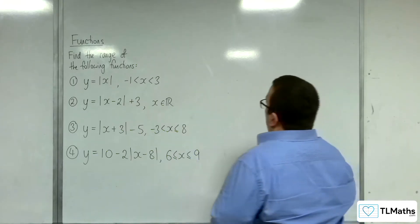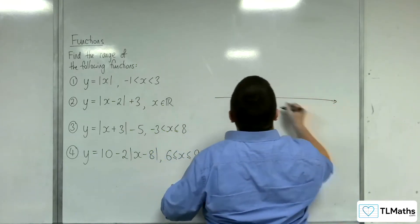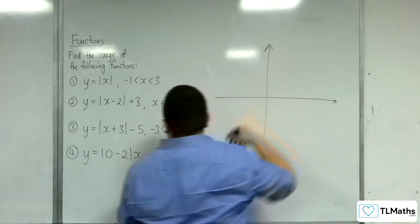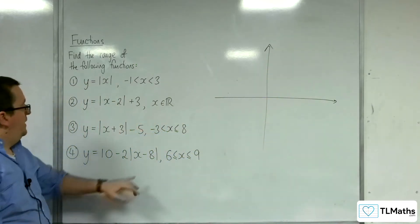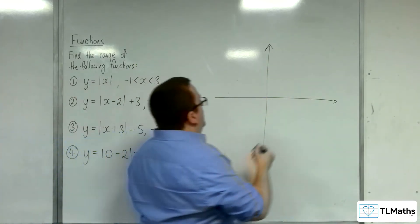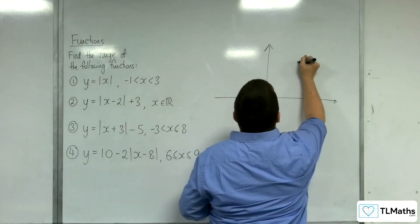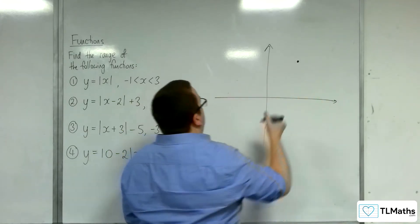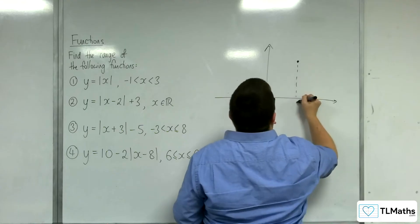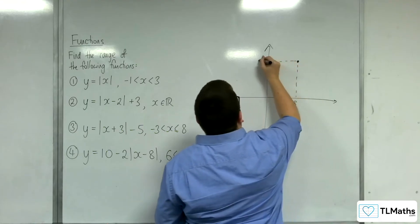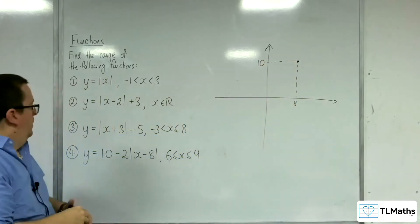Right, let's have a look at number 4. So let's sketch it. It's got a vertex at 8, 10. So 8, 10. So somewhere up here. So that's 8 along, 10 up.